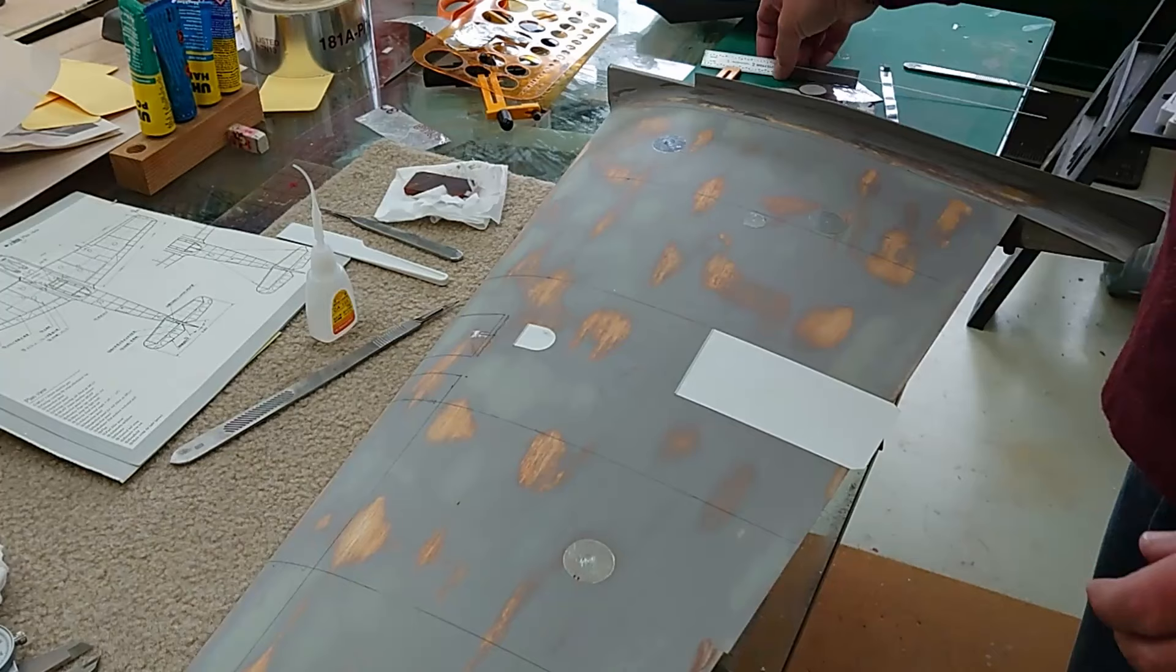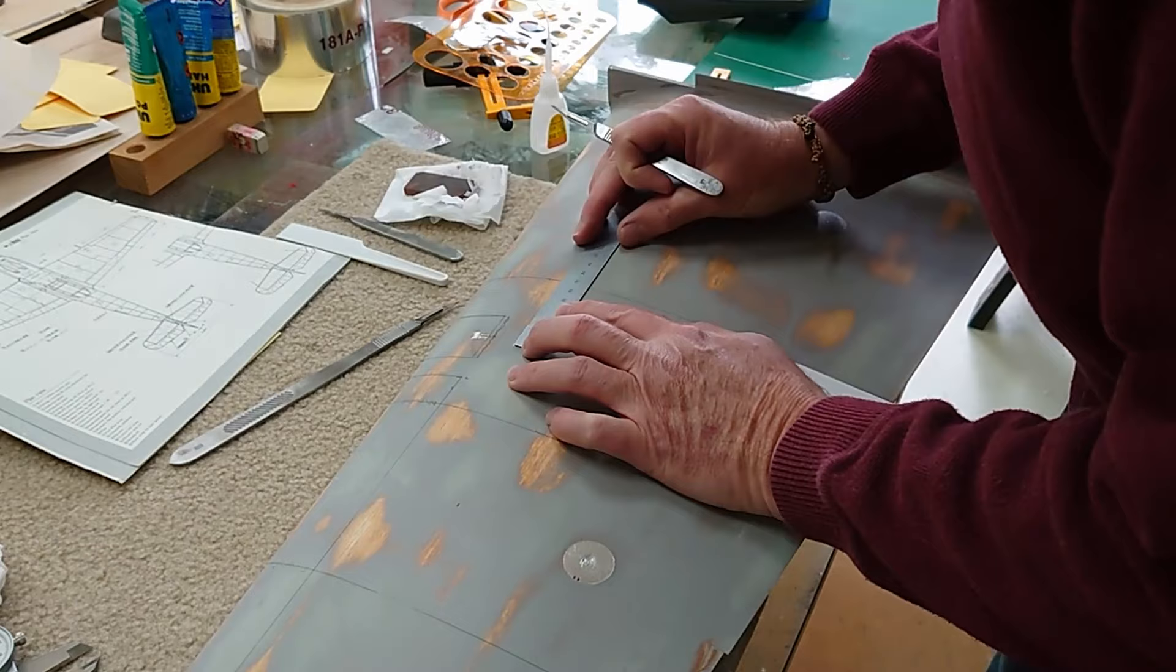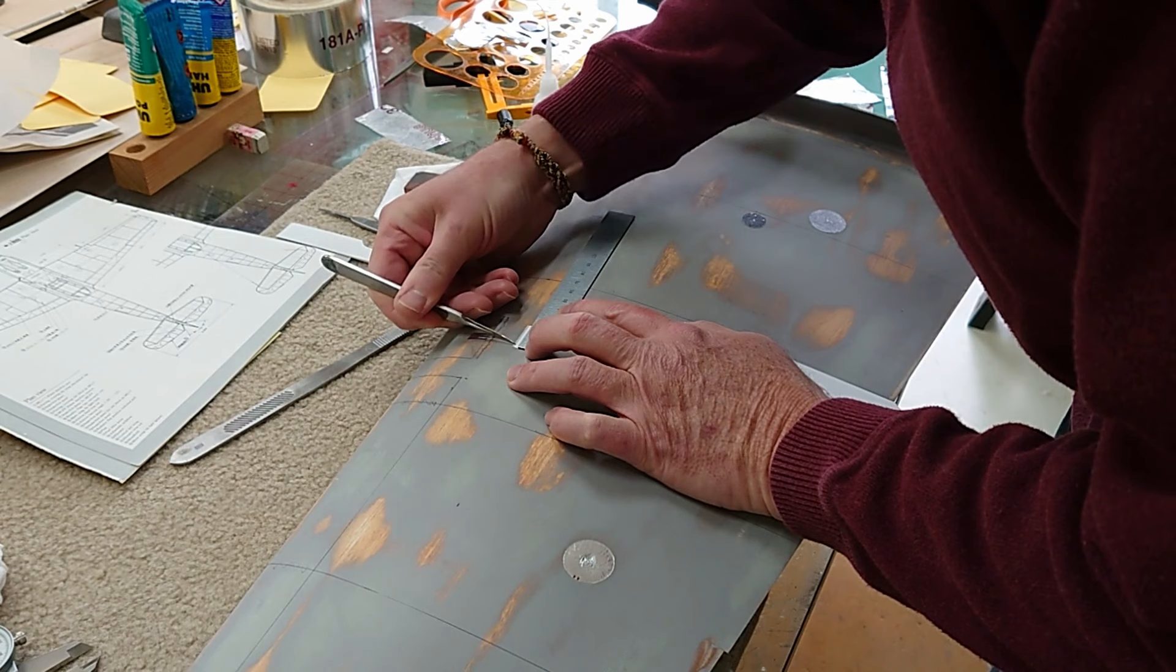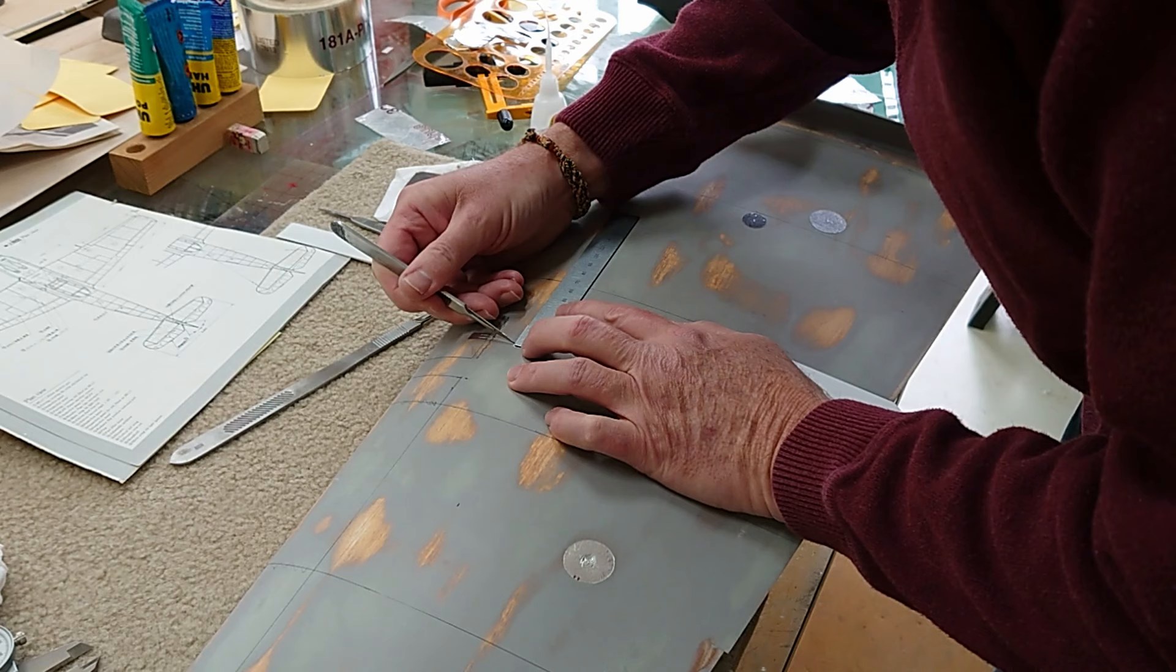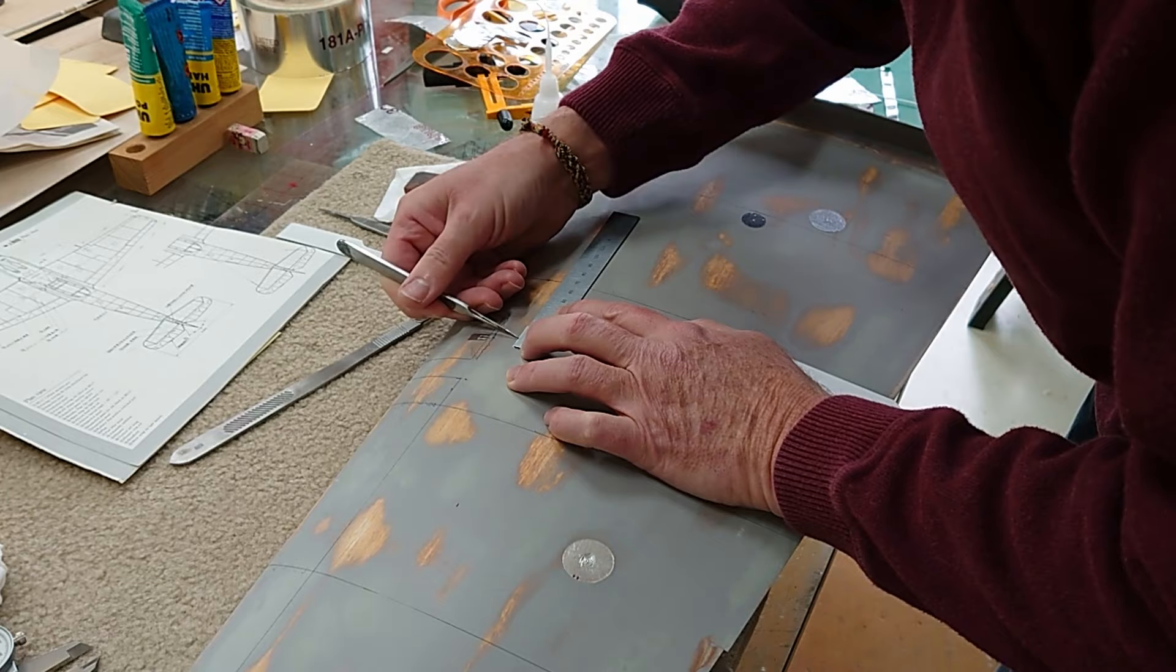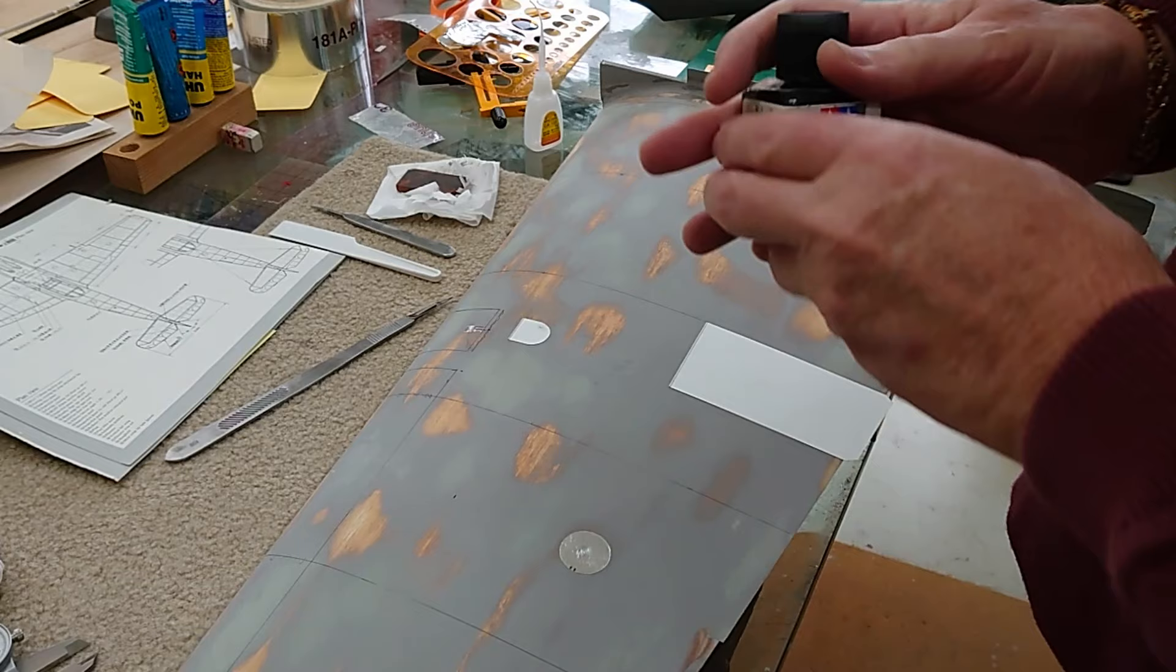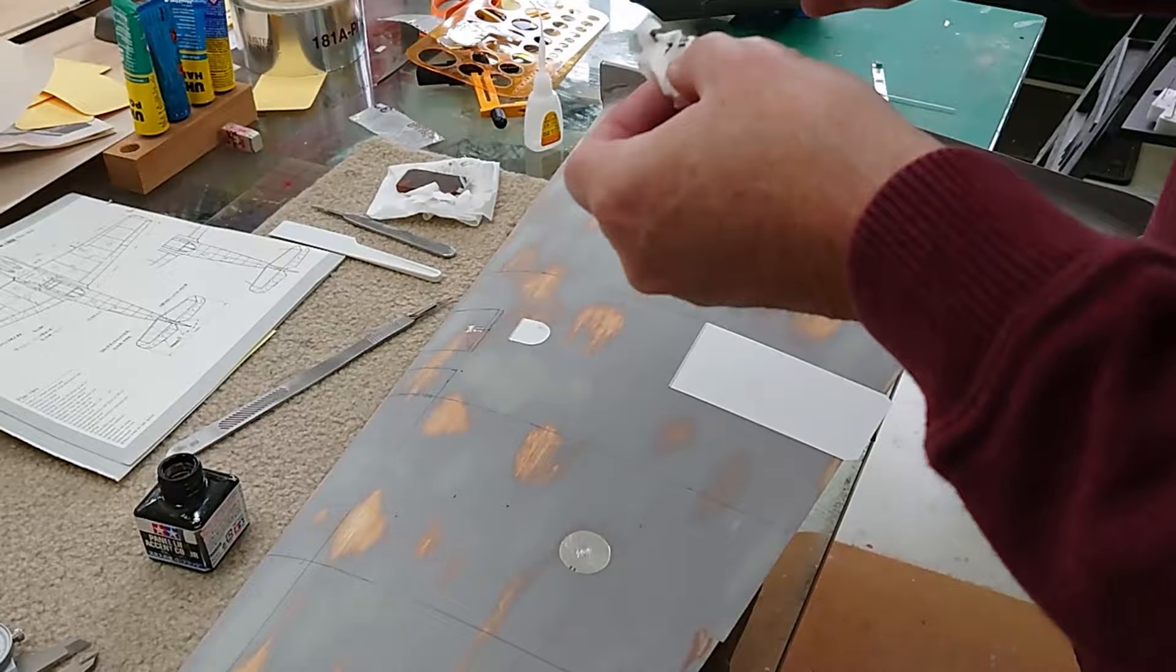Then, to actually make it kind of look like a hinge, we will just make some marks. I'm going to go about every 2 millimeters on this and just cut in some grooves. I'm just using some Tamiya panel line black accent color. I just want to use a little bit of this just to kind of give you the idea. It gives you kind of a hinge look.